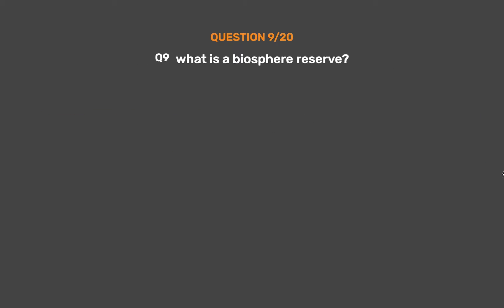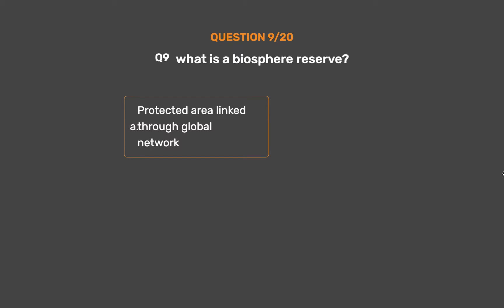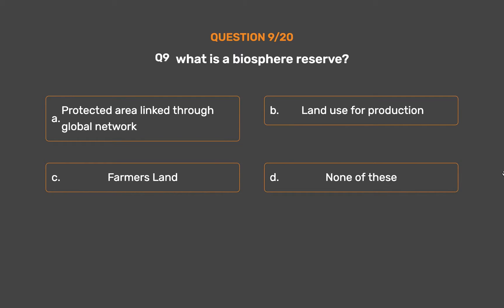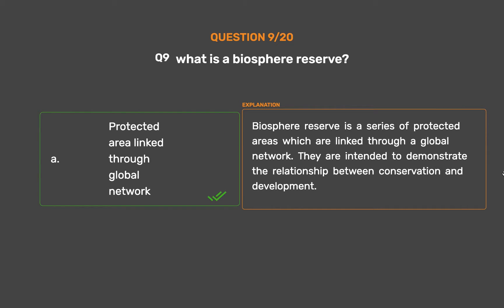Question No. 9. What is a biosphere reserve? Option A: Protected area linked through global network. Option B: Land use for production. Option C: Farmers land. Option D: None of these. The correct answer is Option A: Protected area linked through global network. A biosphere reserve is a series of protected areas which are linked through a global network. They are intended to demonstrate the relationship between conservation and development.